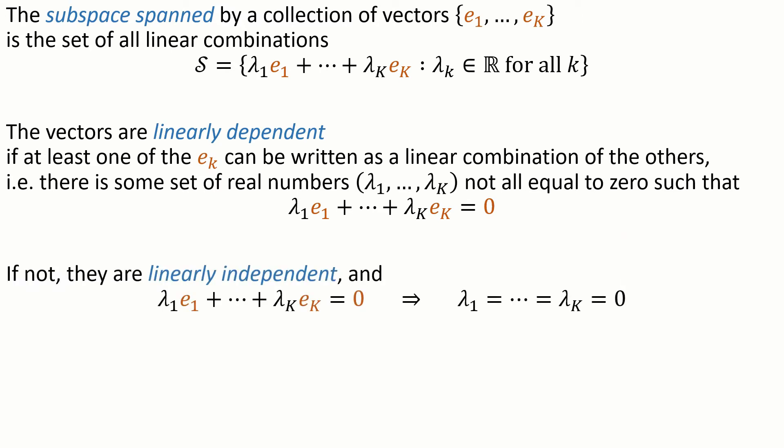Otherwise these vectors are called linearly independent. If we have linearly independent vectors and if some linear combination lambda 1 e1 plus dot plus lambda k ek comes out to be zero, then the lambda coefficients must all be equal to zero.